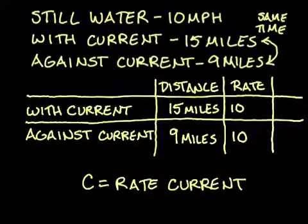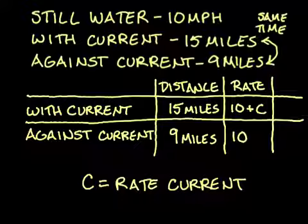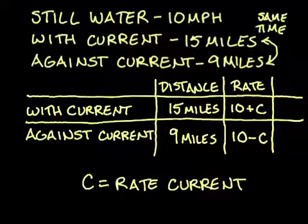With the current, the current's pushing him faster. So though he's going 10 miles an hour just by the boat's power, he's going to be adding that current to him, pushing him that much faster. Against the current, this is when it's pushing against him. So though he's managing 10 miles per hour on his own, he's getting pushed back that rate for the current. So with the current, it will be 10 plus C. Against the current, 10 minus C.